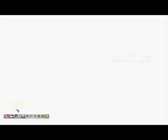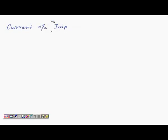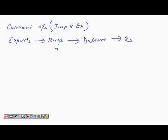So let's state this properly. In the current account, which comprises imports and exports — for example, an exporter who exports rugs to the US market needs to convert the dollars he receives for the rugs into rupees. So there is full convertibility and no restriction. If you get ten thousand dollars or ten million dollars, you have full convertibility to convert those into Indian rupees.